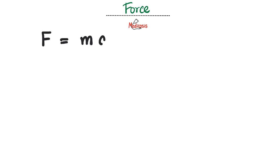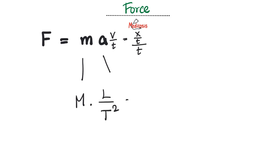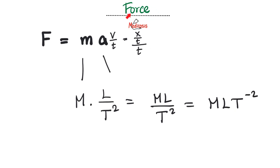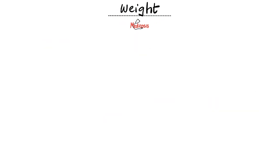May the force be with you — remember Newton's second law: F equals ma. The dimensional unit for m is M. Acceleration is velocity over time, and velocity is displacement over time, so this is length divided by T squared. Multiply them together to get ML divided by T squared — the final answer is ML T to the power negative 2. The measuring unit of force is the Newton. Weight is also measured in Newtons, so the dimensional formula for weight is the same as force: ML T to the power negative 2.